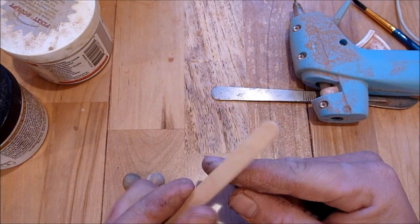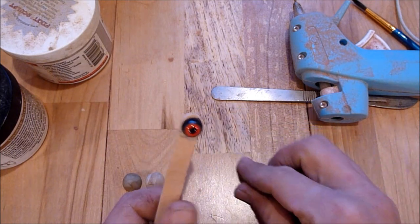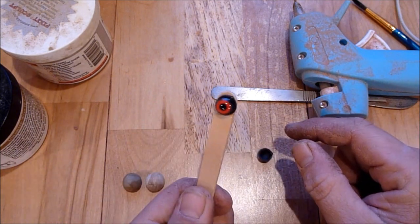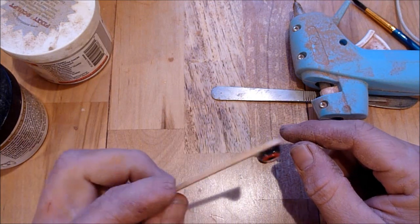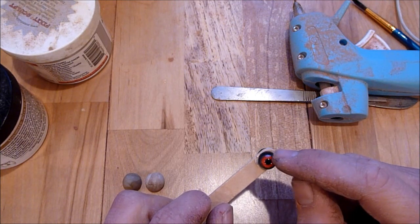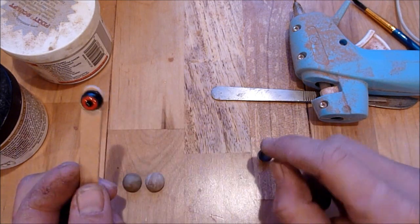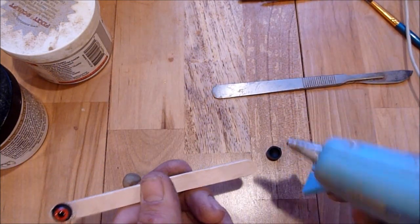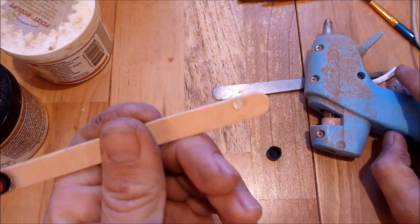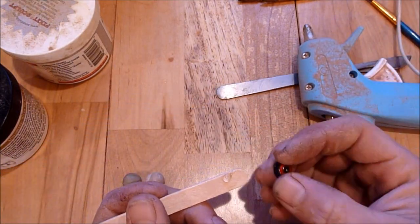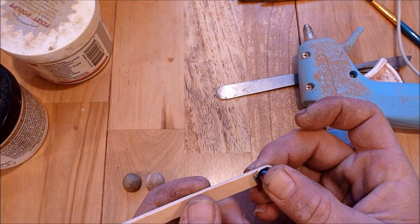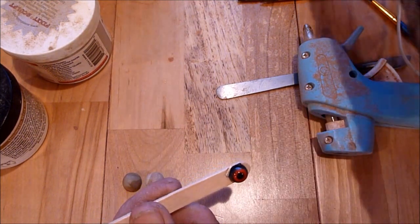And I glue it to the end of a popsicle stick that way instead of holding an eye in between my fingers and trying to put an eye ring on it, I can just hold this popsicle stick and move it around and be able to do the fine details in the eye ring. Hot glue just a little dab, a little dab will do you, and then just the edge over the edge of the eye and just hold that on there and let it set.